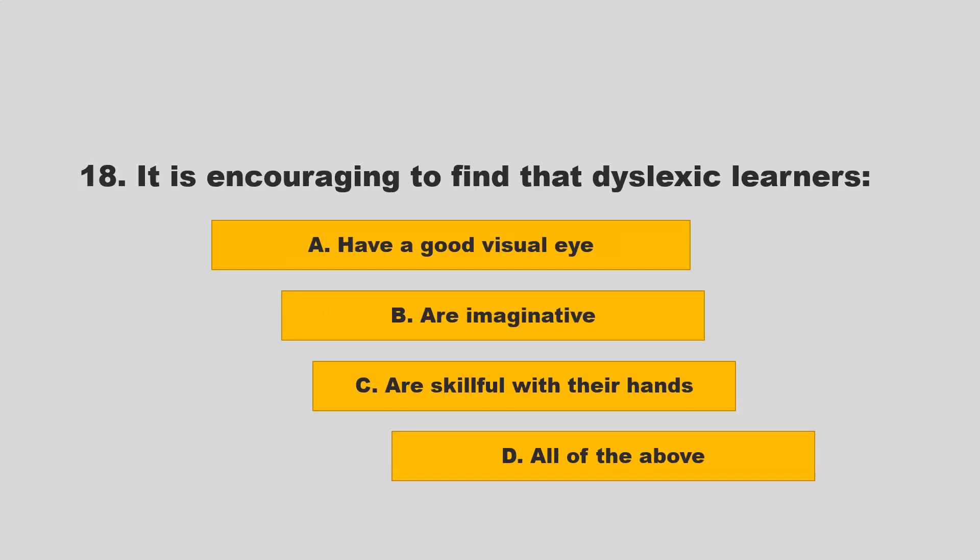It is encouraging to find that dyslexic learners: A) have a good visual eye; B) are imaginative; C) are skillful with their hands; D) all of the above. If you chose D — all of the above — you are correct.